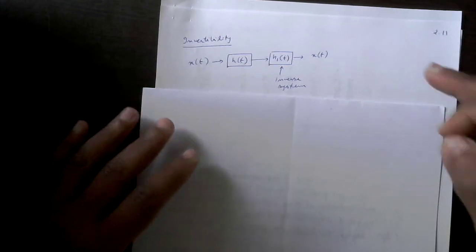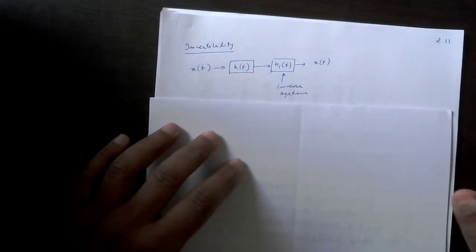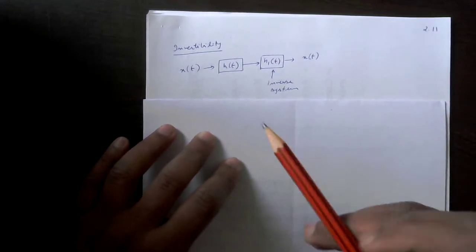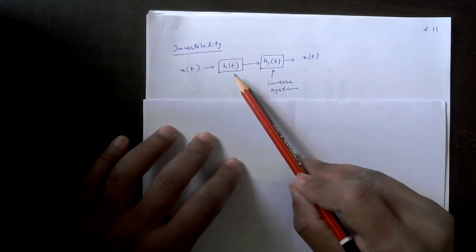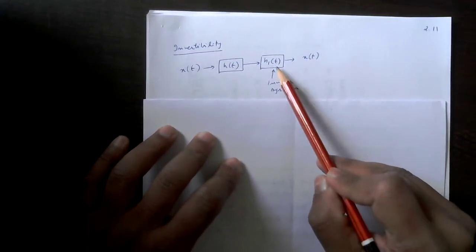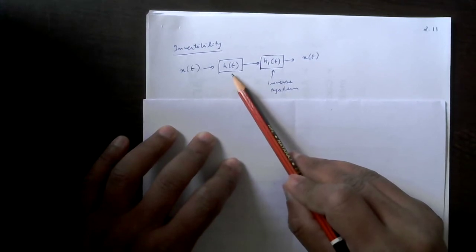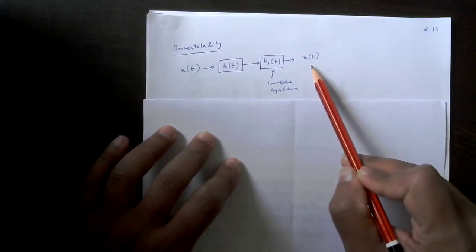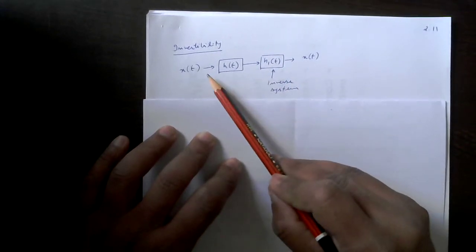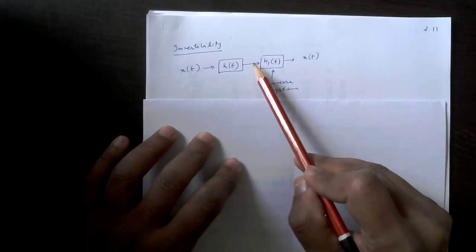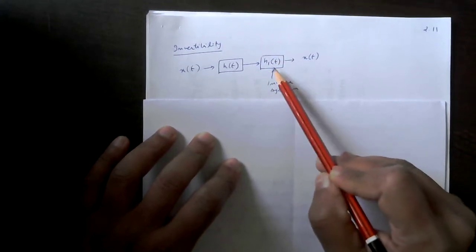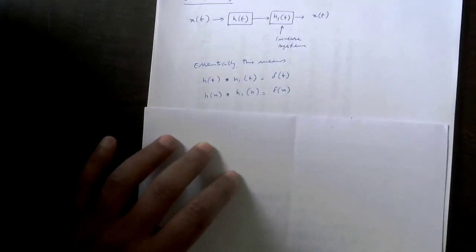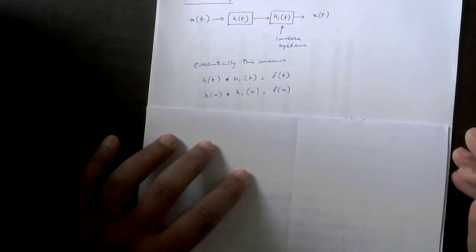The next property we will see is about invertibility of systems. We saw what an inverse system was: there is an x(t) given as input to some system h(t). The inverse of that system, when you convolve the inverse system with the output of the given system h(t), you should get back the original input x(t). So x(t) convolved with h(t) gives y(t), and y(t) convolved with h_inv(t) gives back x(t). Let us see what the impulse response has to do with this.